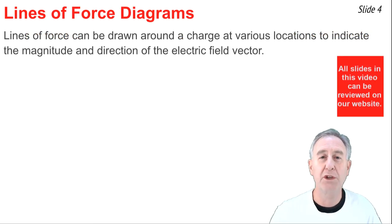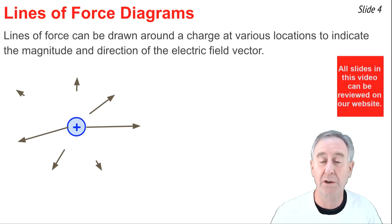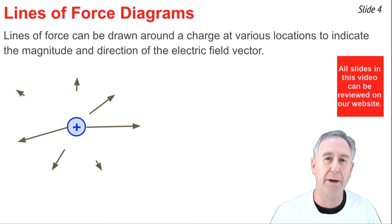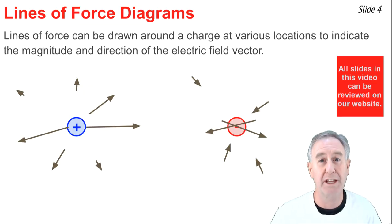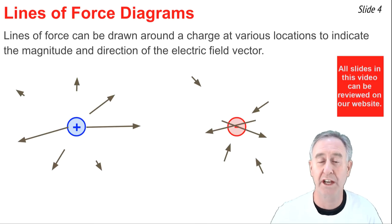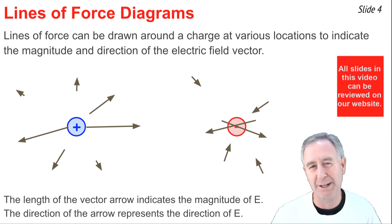One means of representing information about the magnitude and direction of the electric field vector around a source charge is to draw what we call lines-of-force diagrams. Here's a lines-of-force diagram for a positive source charge. You'll notice that there are vector arrows drawn, and that those arrows are longest at locations closest to the source charge and smallest at locations furthest away. You'll also notice that each arrow points away from the positive source charge. For a negative source charge, the arrows are similarly longer closer to the source and shorter farther away, but they point towards the negative source charge. The lengths of the arrows represent information about the magnitude, and the direction of the arrows represents the direction of the electric field vector.